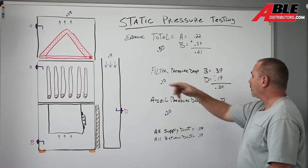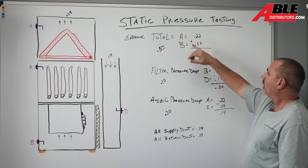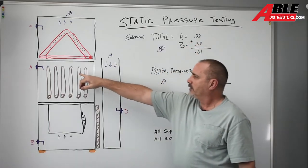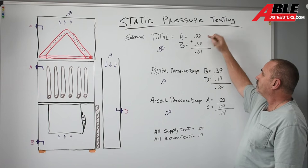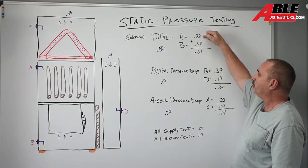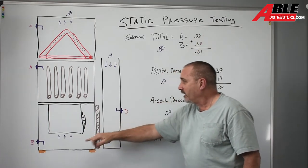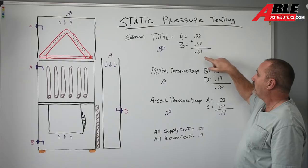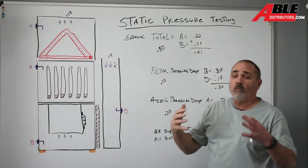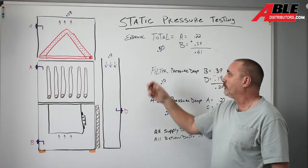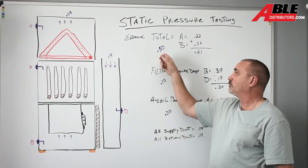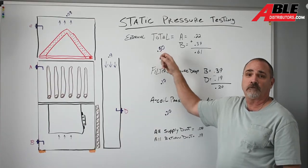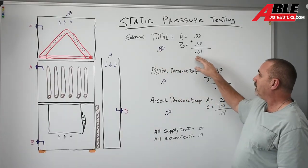So on this furnace, this was actually my sister's furnace, I had A, the pressure inside the furnace up at the supply side was a 0.22 and a negative 0.39 down below. We're going to add those up. It's 0.61. Almost every single furnace manufacturer out there wants a total external static pressure not to exceed 0.50. So obviously we exceeded it.